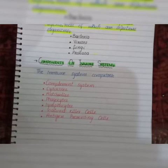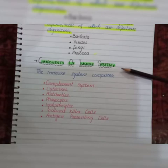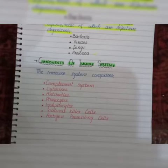As we are studying about the body's immunity or the immune system, to maintain the body's immunity we have some components in our body that help to maintain immunity. So here we have some components of the immune system. Let's discuss each one briefly.